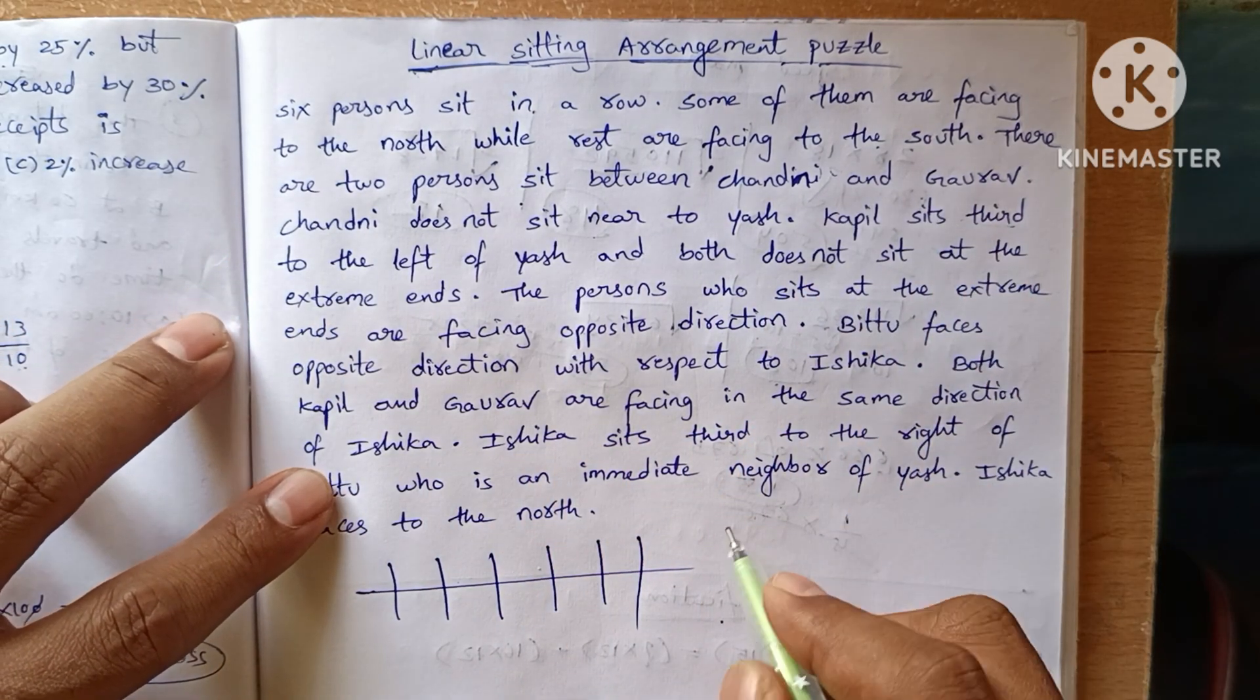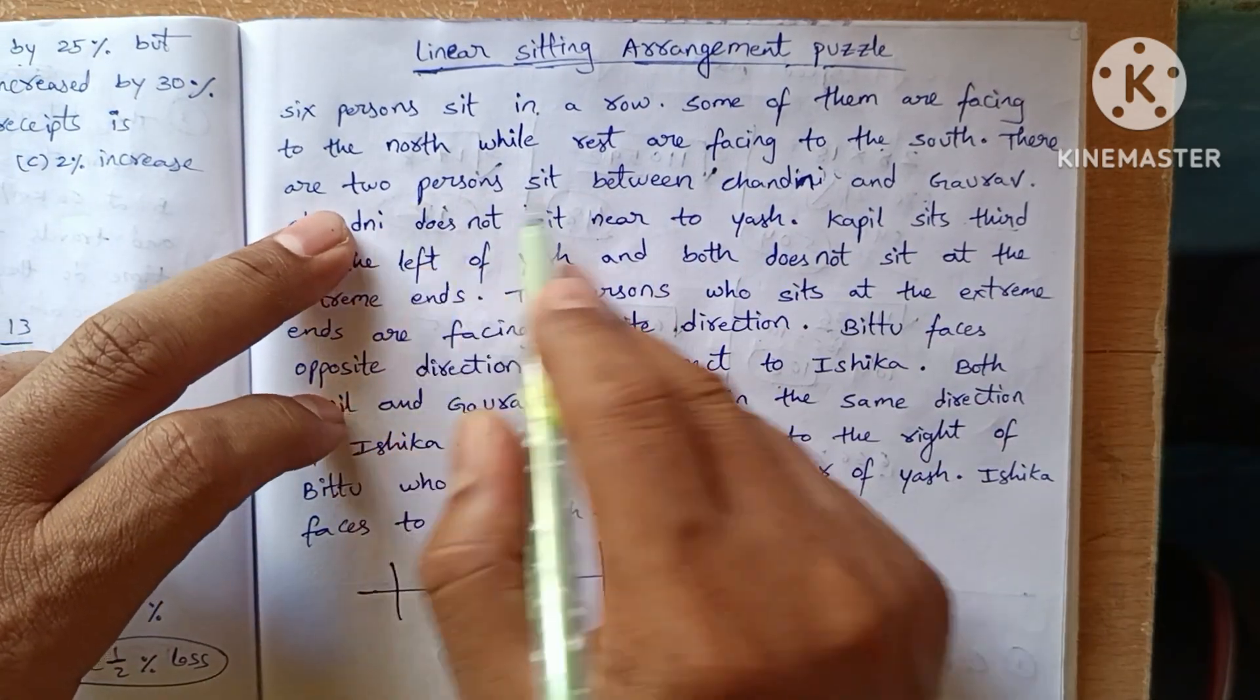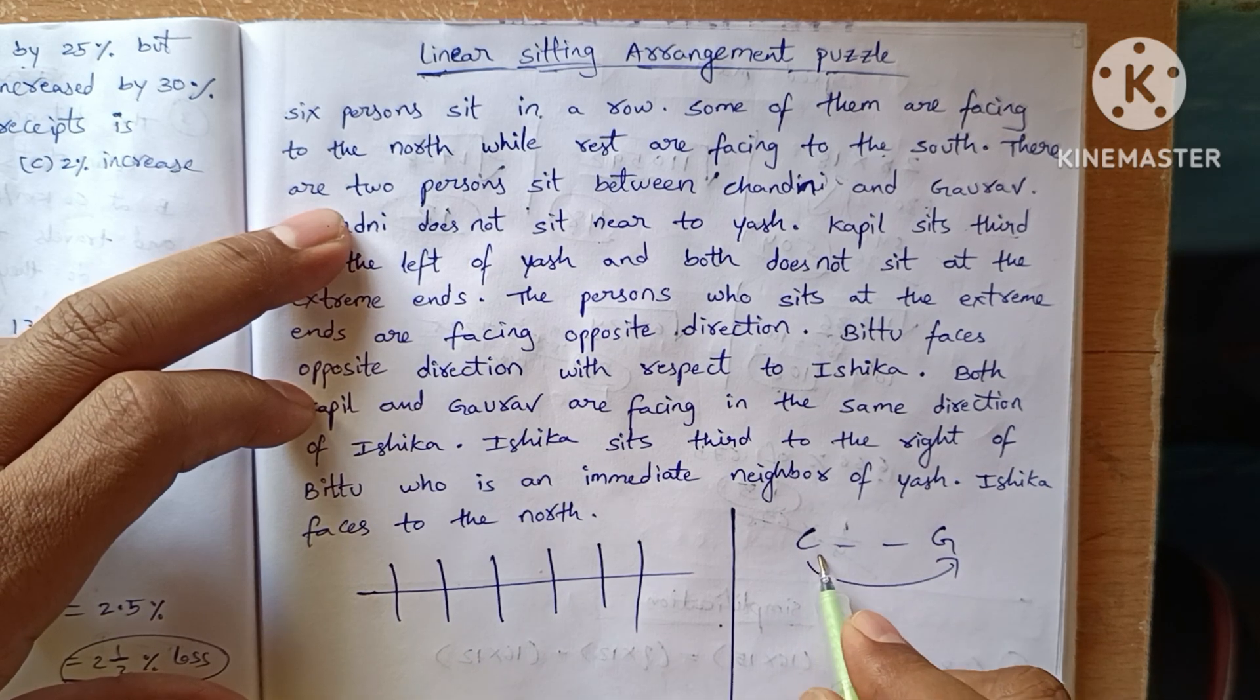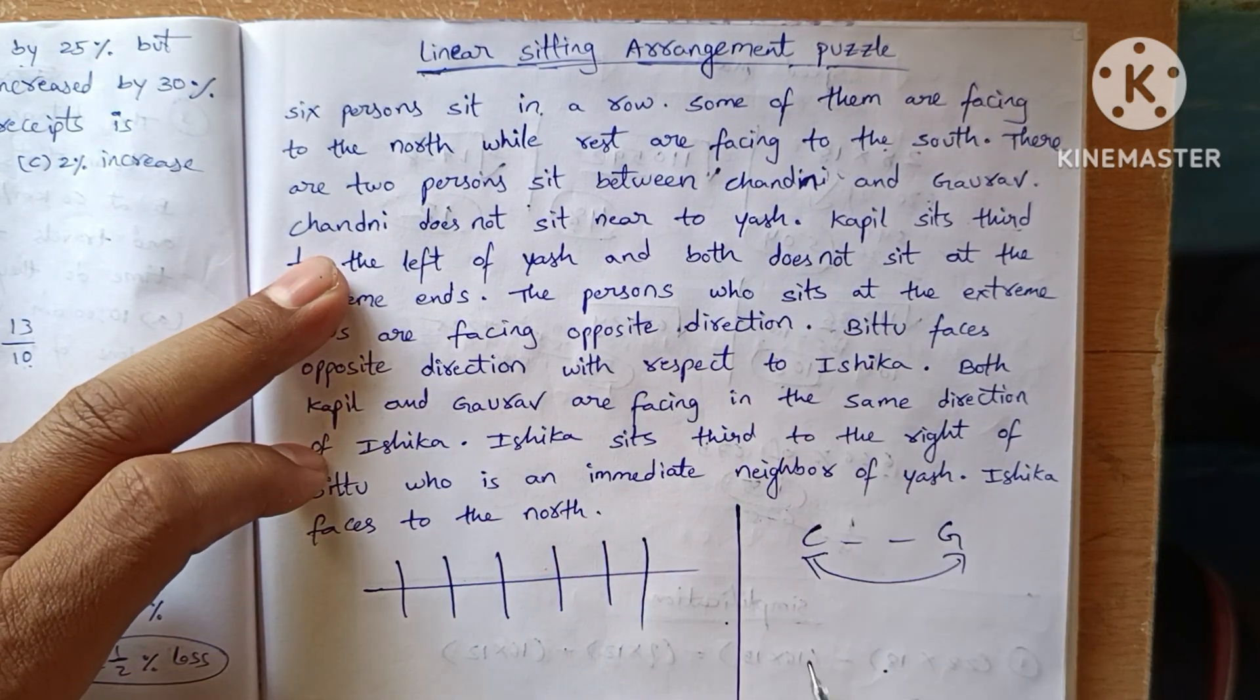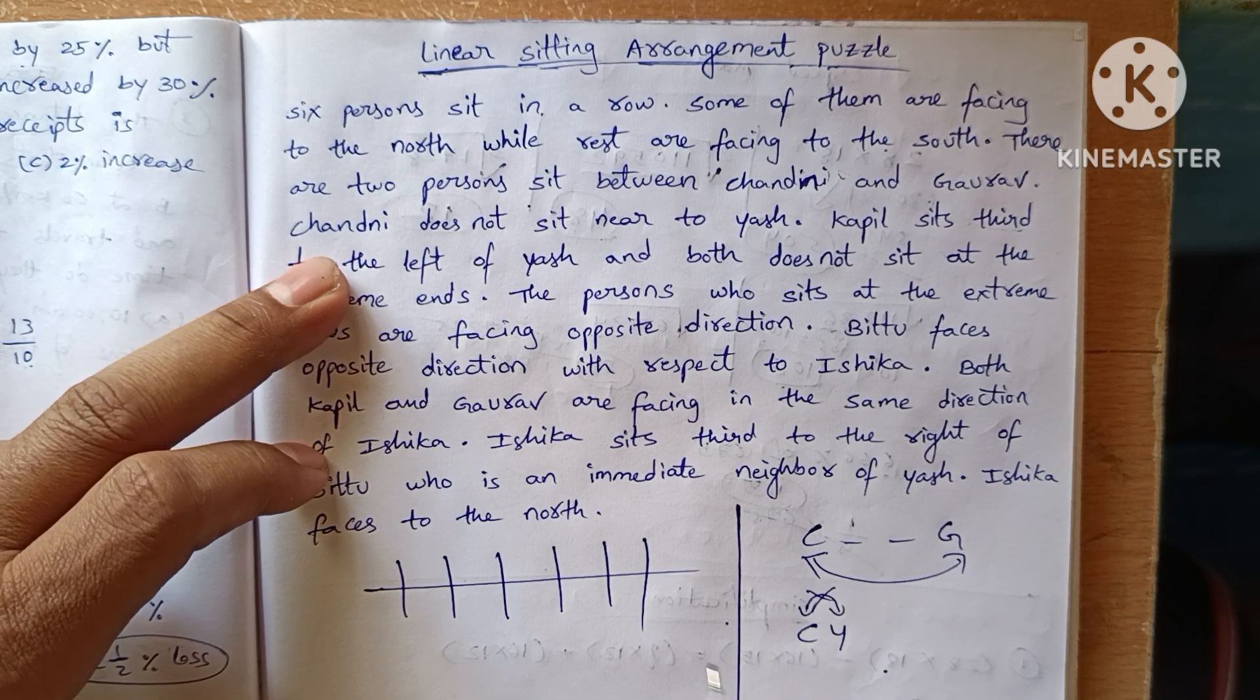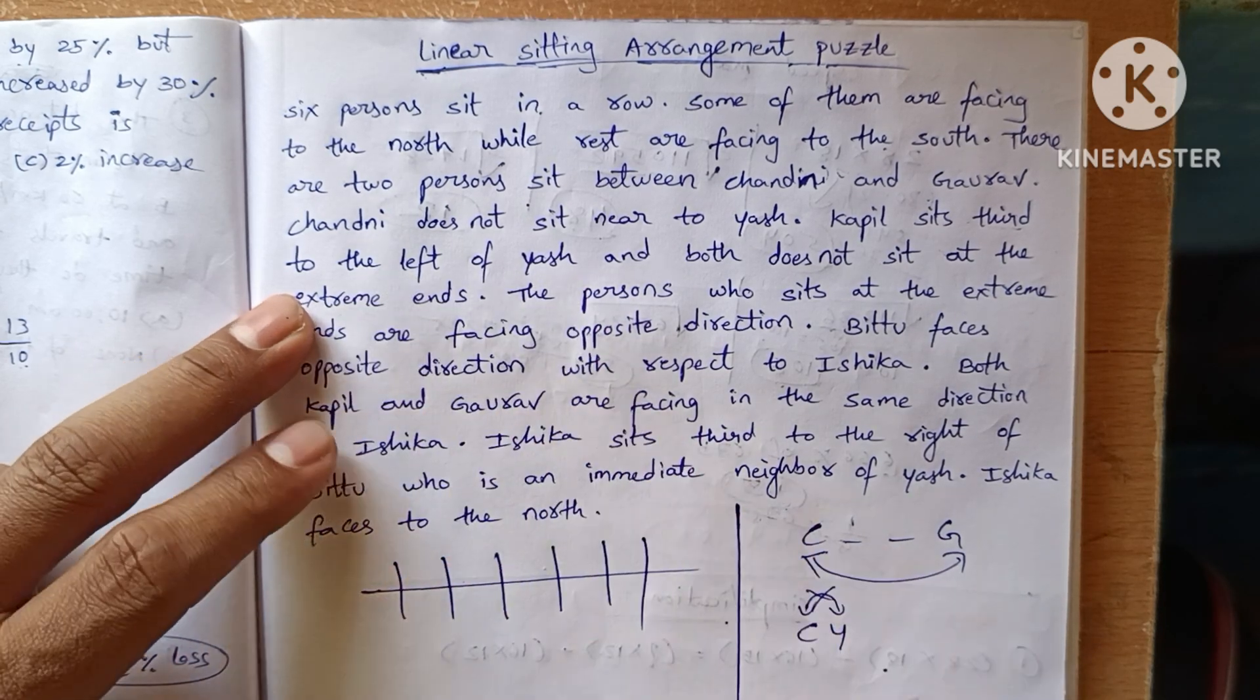There are two persons sitting between Chandini and Gauru. Let's note the rough statements on the side. Two people sit between Chandini and Gauru, with two people in between them. Chandini does not sit near to Esh. Chandini and Esh do not sit adjacent to each other.